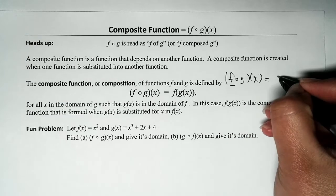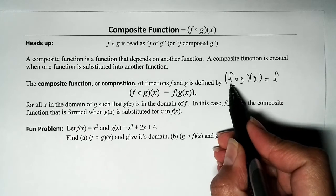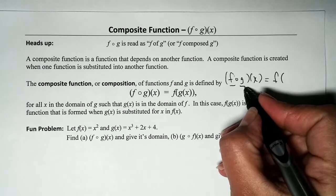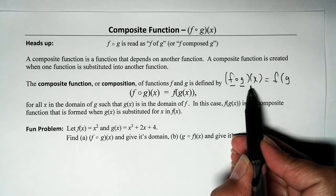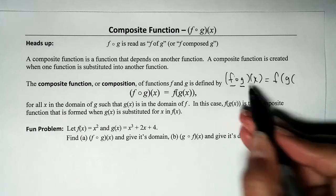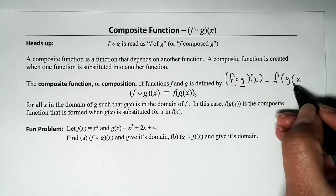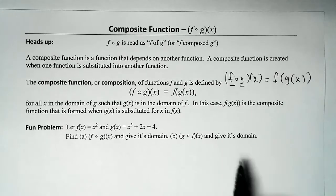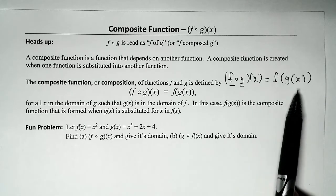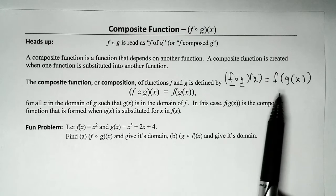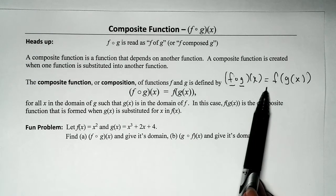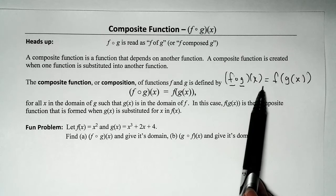I'm always going to rewrite this without the small circle symbol. So we have F of G, written with open parentheses: F of G of X, with two open parentheses and two close parentheses. The gist of function composition is that we want to substitute one function into another function, and whatever that result is, that will be the composite function.